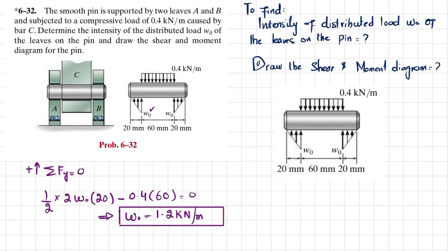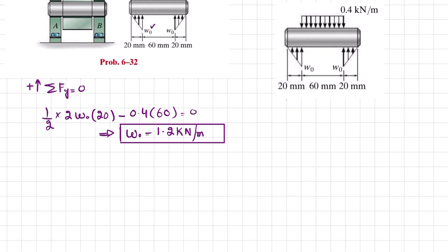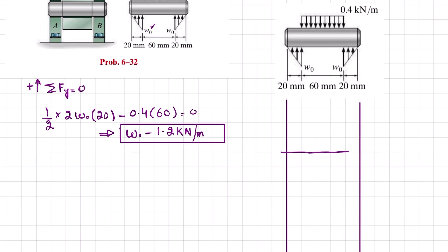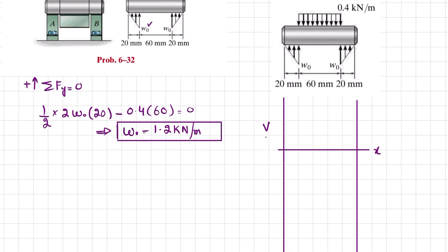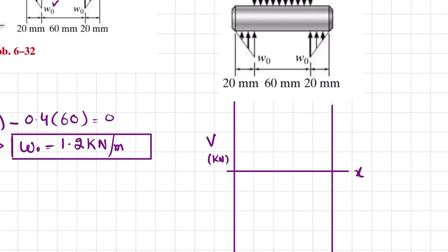Now we will draw the shear force diagram. The x-axis represents the length of the pin and the y-axis represents shear force V in kilonewtons. At point A, the shear force starts at zero.